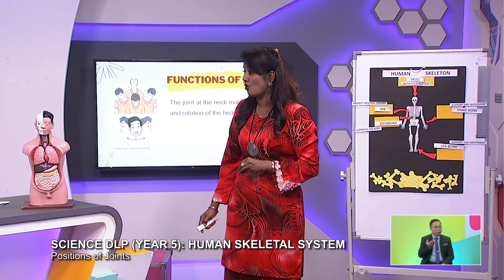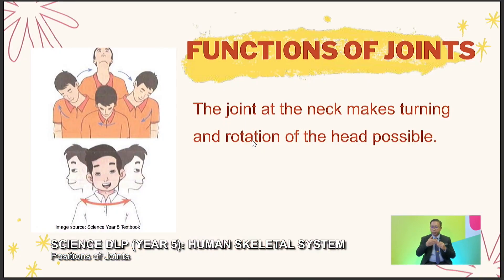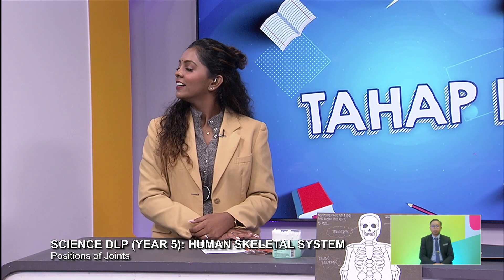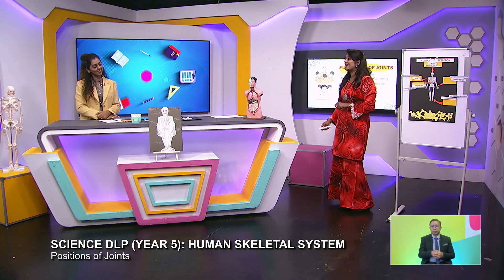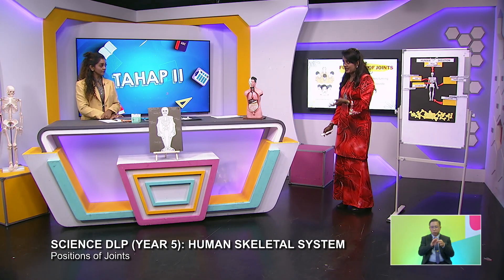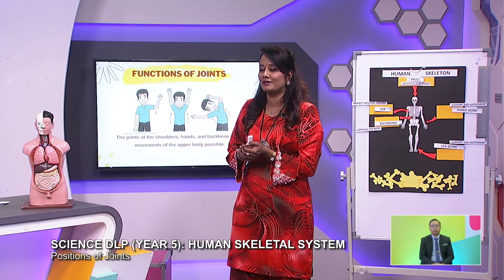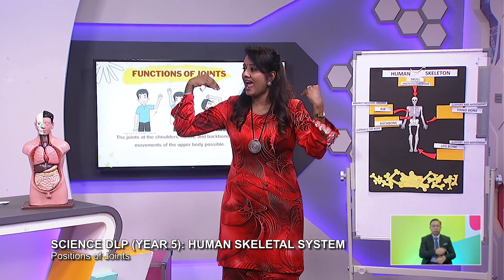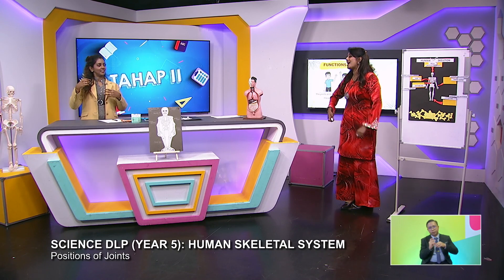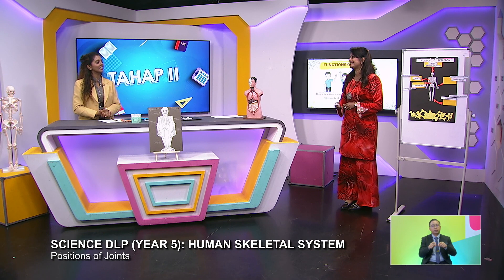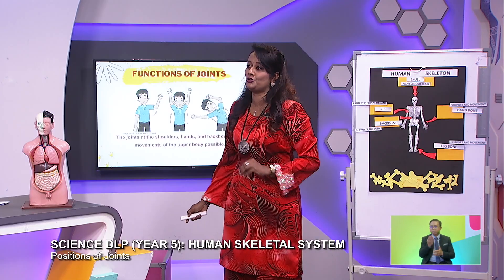And then we go to the function of joints. The joint at the neck makes turning and rotation of the head possible. You can rotate, go up and down, left and right — that's the function of the first joint. Even the joints at the shoulder, hand, and backbone make movement of the upper body possible. That's how the joints work together.